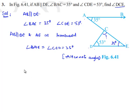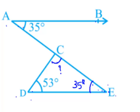Now, in triangle CDE, the sum of angles is equal to 180 degrees.